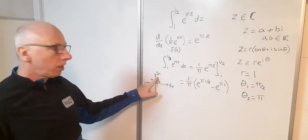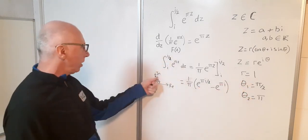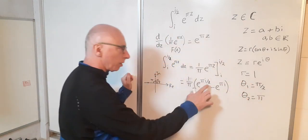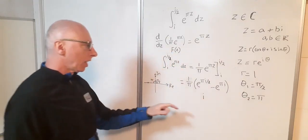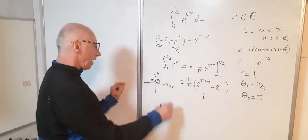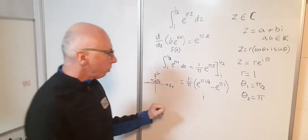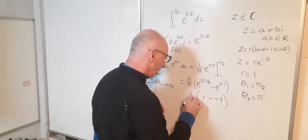So here on the imaginary axis with r equals 1, this is just going to give me i. So e to the pi i over 2, that's just going to give me i. And e to the pi i, that's on the real axis and it's over here, that's going to give me minus 1. So I've got minus minus 1. So let's put that in brackets and multiply by 1 over pi.